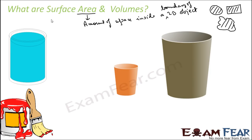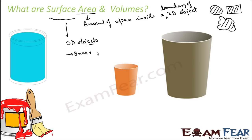When you talk about surface area, you talk about 3D objects. Surface area of a solid 3D object is the measure of the total area that the surface of an object occupies. For example, if you are talking about a glass, this glass occupies some surface — that is the surface area of this glass. When you talk about surface area, you generally talk about inner surface area and outer surface area, so we'll have different terms: inner surface area, outer surface area, total surface area.